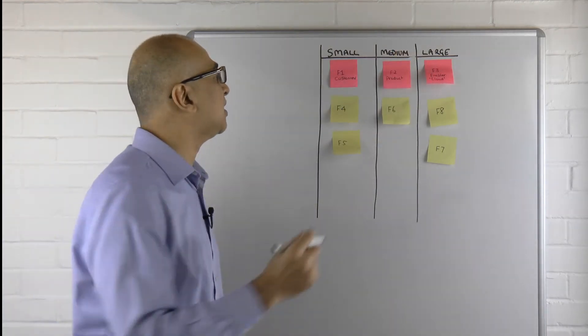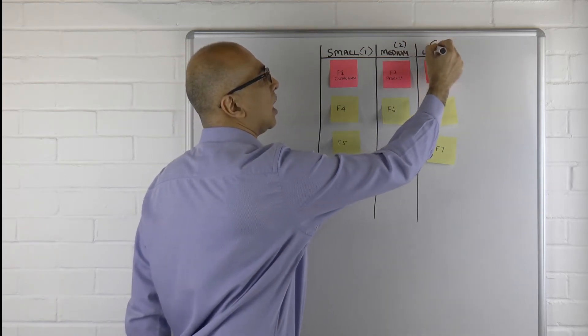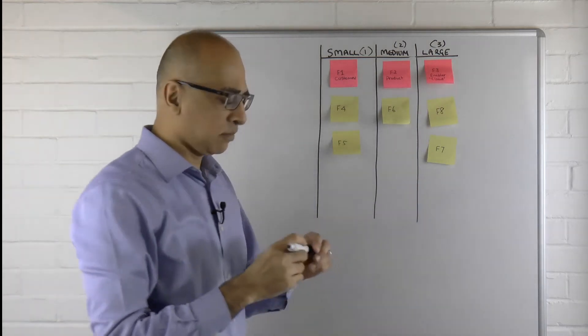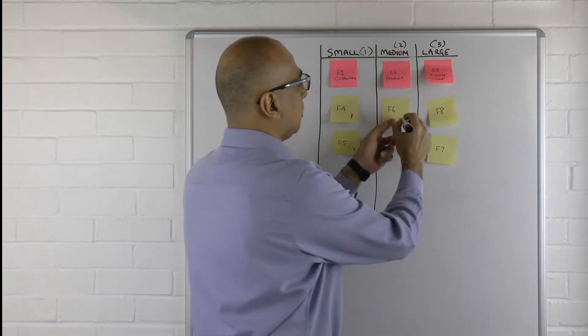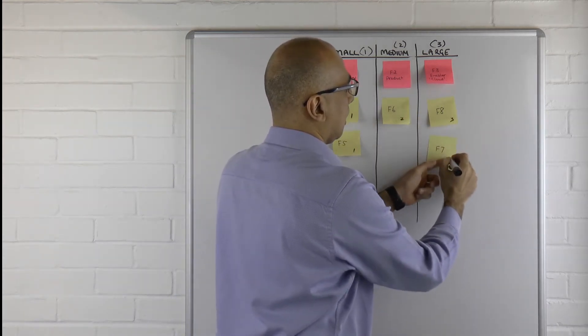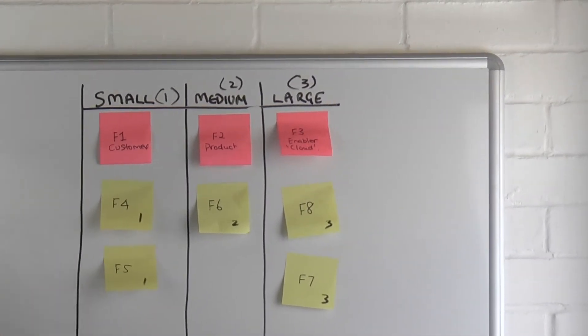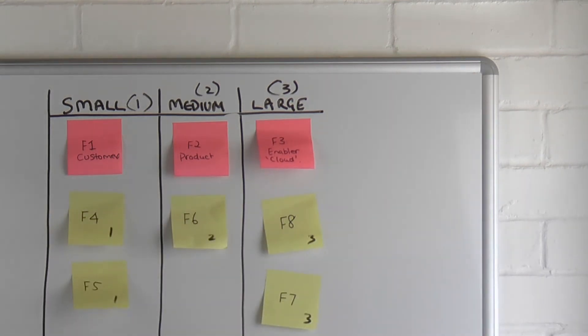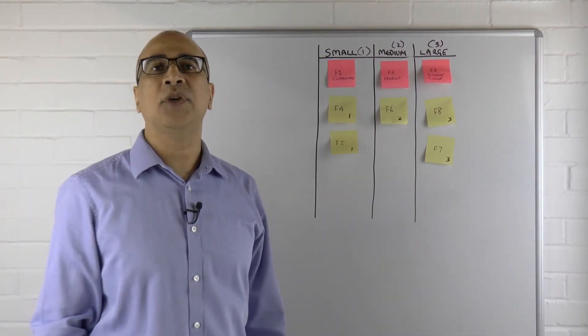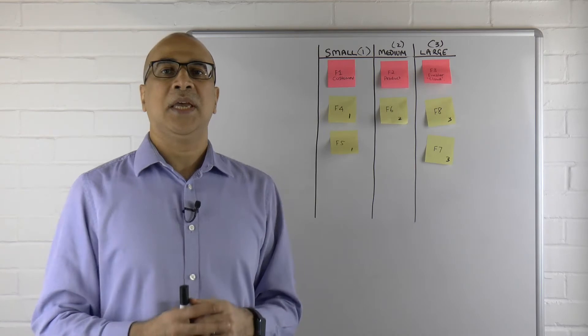The next thing we want to do is give these a number. Let's keep it simple. Let's call that a one, let's call that a two, and let's call that a three. Now what we have is all of your features—you obviously have more, just for the exercise I've just got a few features here. You plot them on here, and now what you do is you can add up all of the feature numbers and you get an idea of the overall size of all of the features that are going into your PI planning.